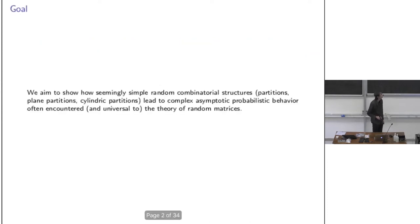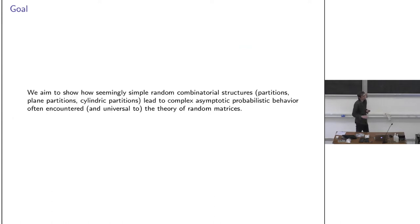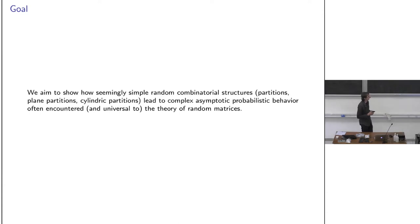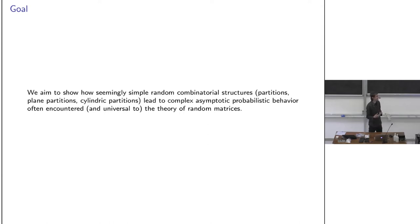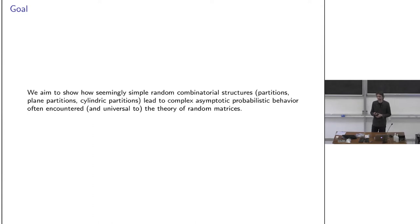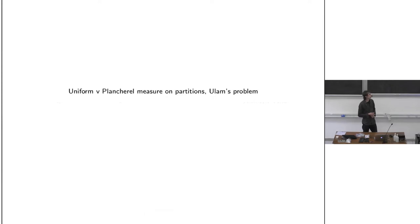The aim of this talk is to show how very simple — or somewhat simple — random combinatorial and mathematical-physical structures can lead to fairly complex asymptotic probabilistic and statistical behavior, which is often encountered in the theory of random matrices. This is not a talk on random matrices, but objects that appear often come from random matrices.